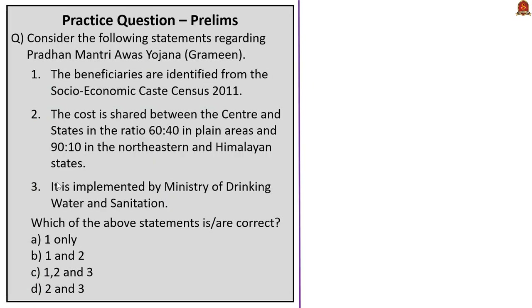The fourth question asks about Pradhan Mantri Avas Yojana Gramin. Statement 1 — beneficiaries are identified from the Socio-Economic Caste Census of 2011 — is correct. Statement 2 — cost-sharing ratio is 60:40 for plain areas and 90:10 for northeastern and Himalayan states — is correct. Statement 3 — the scheme is implemented by the Ministry of Drinking Water and Sanitation — is wrong; it is implemented by the Ministry of Rural Development. The correct answer is Option B: 1 and 2.